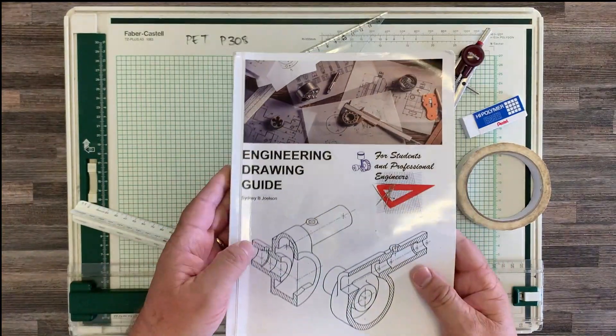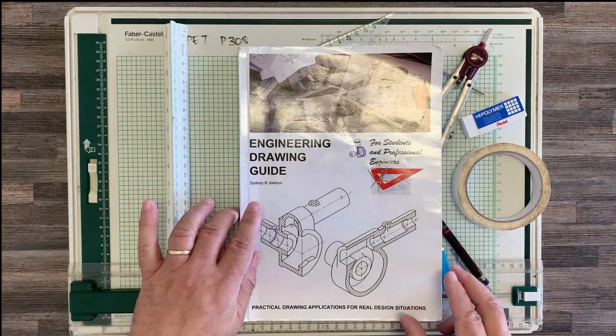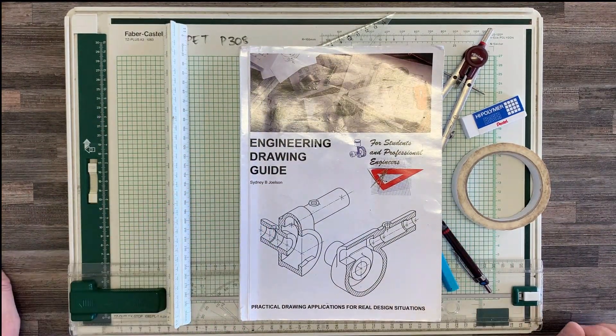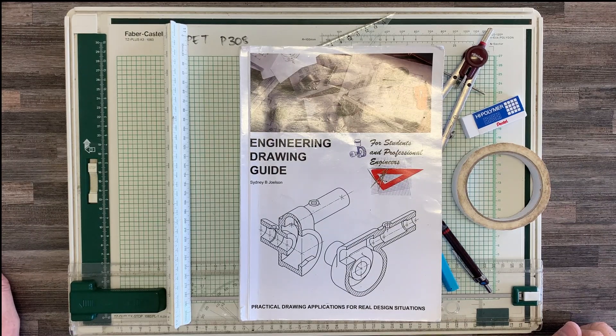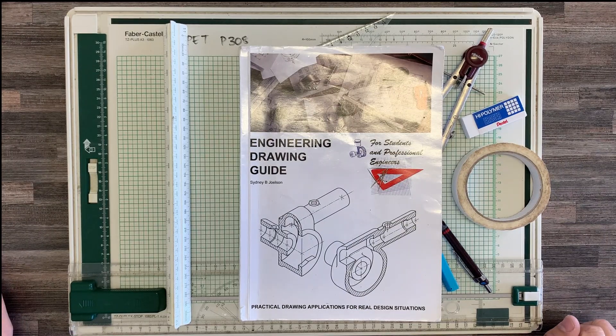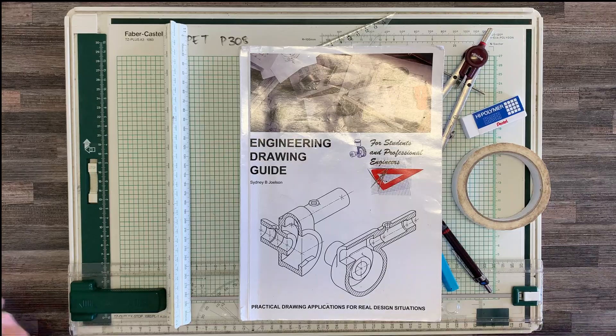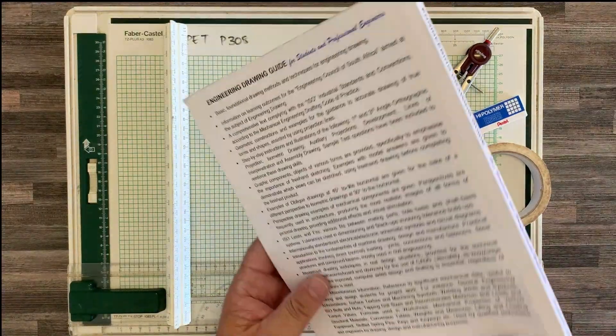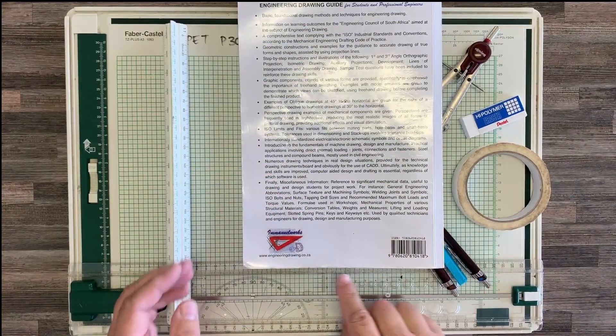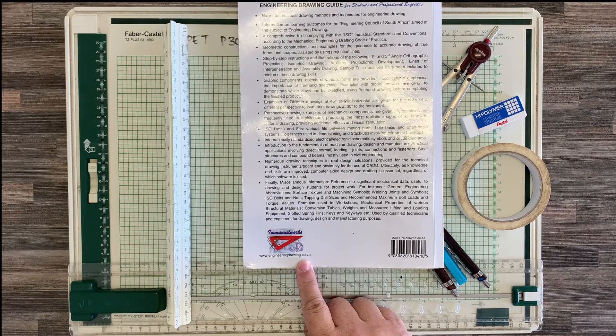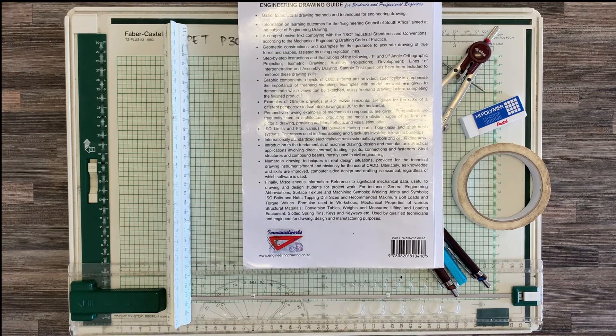The textbook is called the Engineering Drawing Guide by Sydney B. Jolson, and this is a book that is locally produced so it is not very expensive. If you're not able to get your hands on a hard copy at the moment, you can go to the website engineeringdrawing.co.za and purchase a PDF version of this book and download it.